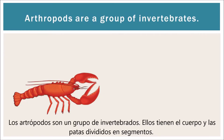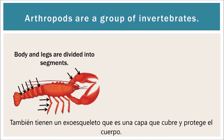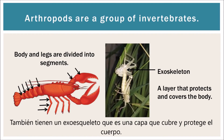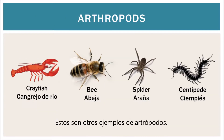Arthropods are one group of invertebrates. They have a body and legs divided into segments. They also have an exoskeleton, which is an outer layer or skeleton that covers and protects their body. Each time an invertebrate grows, it needs to shed its exoskeleton and grow a new one. These are some more examples of arthropods: a crayfish, a bee, a spider, and a centipede.